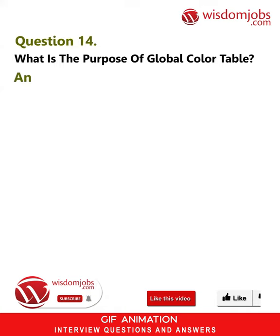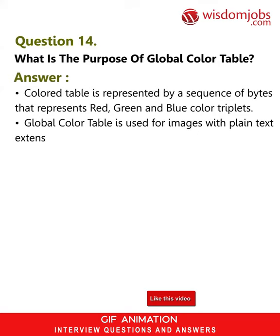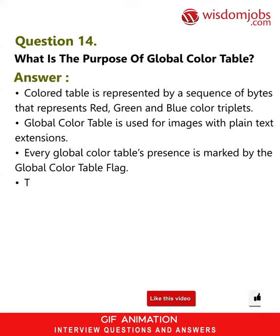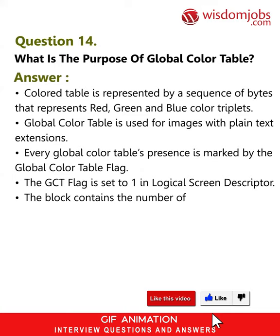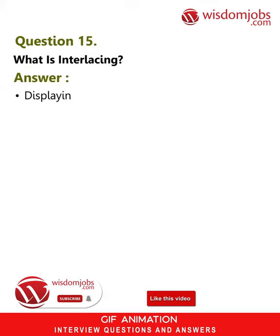Question 14: What is the purpose of the global color table? Answer: A color table is represented by a sequence of bytes representing red, green, and blue color triplets. The global color table is used for images with plain text extensions. Every global color table's presence is marked by the global color table flag. The GCT flag is set to 1 in the logical screen descriptor. The block contains the number of bytes equal to 3 × 2^(size of global color table + 1). One global color table is present per data stream.